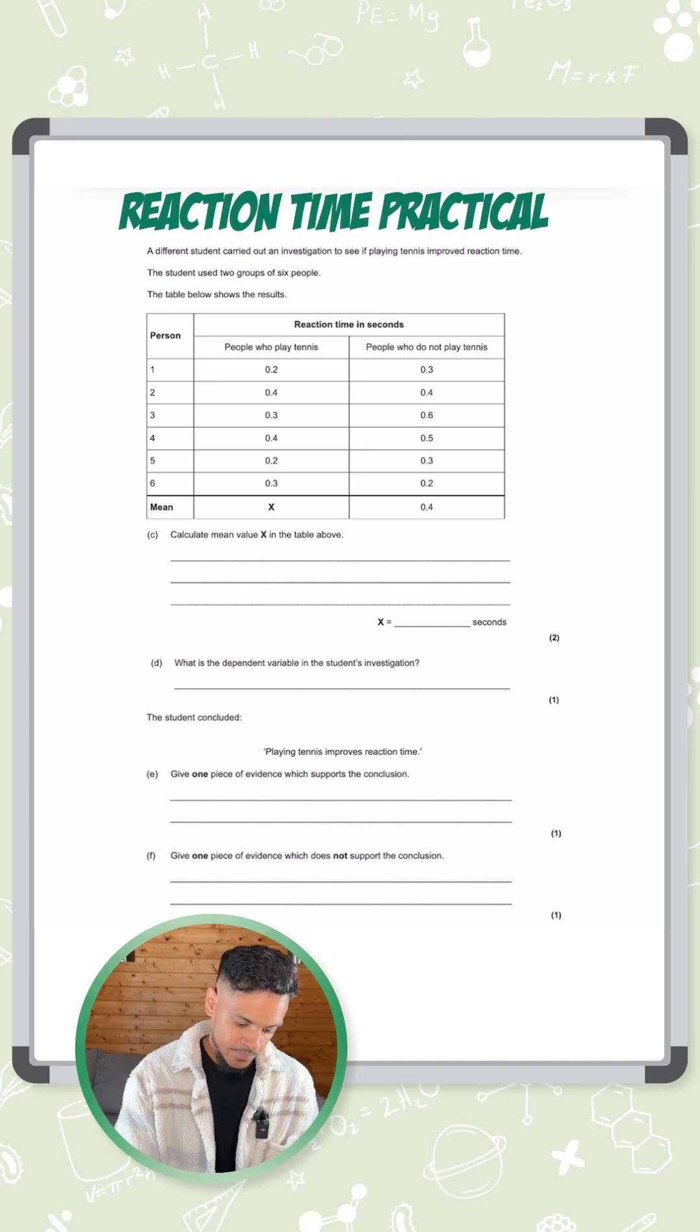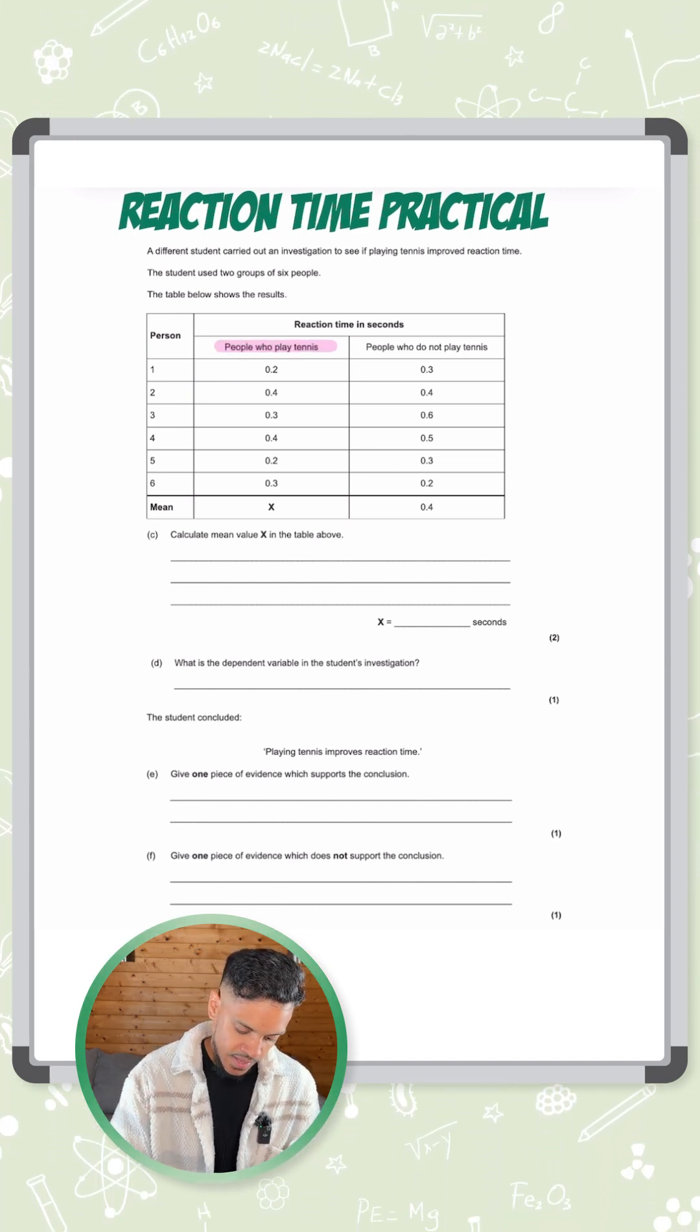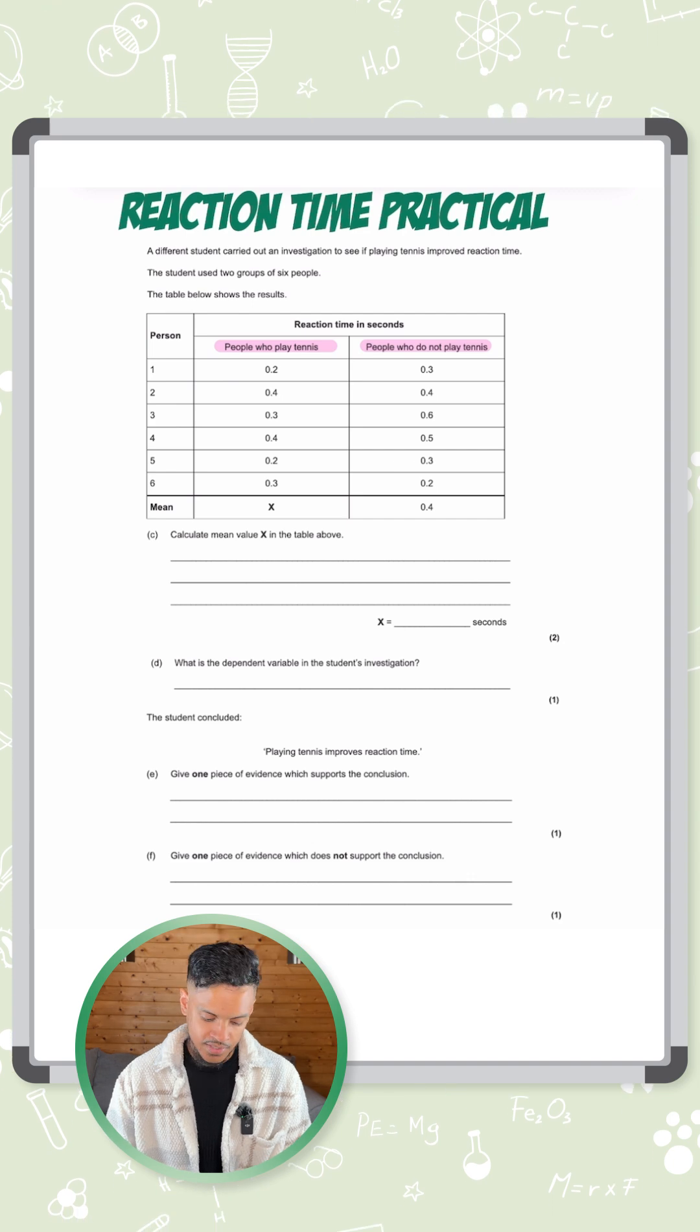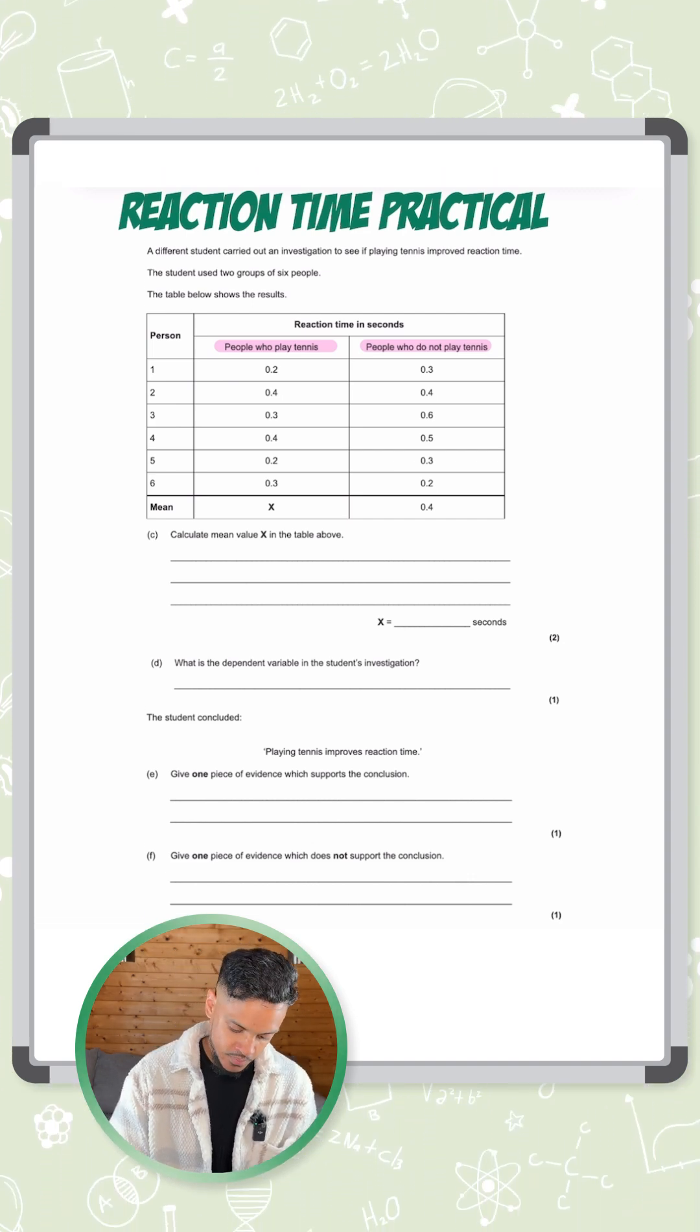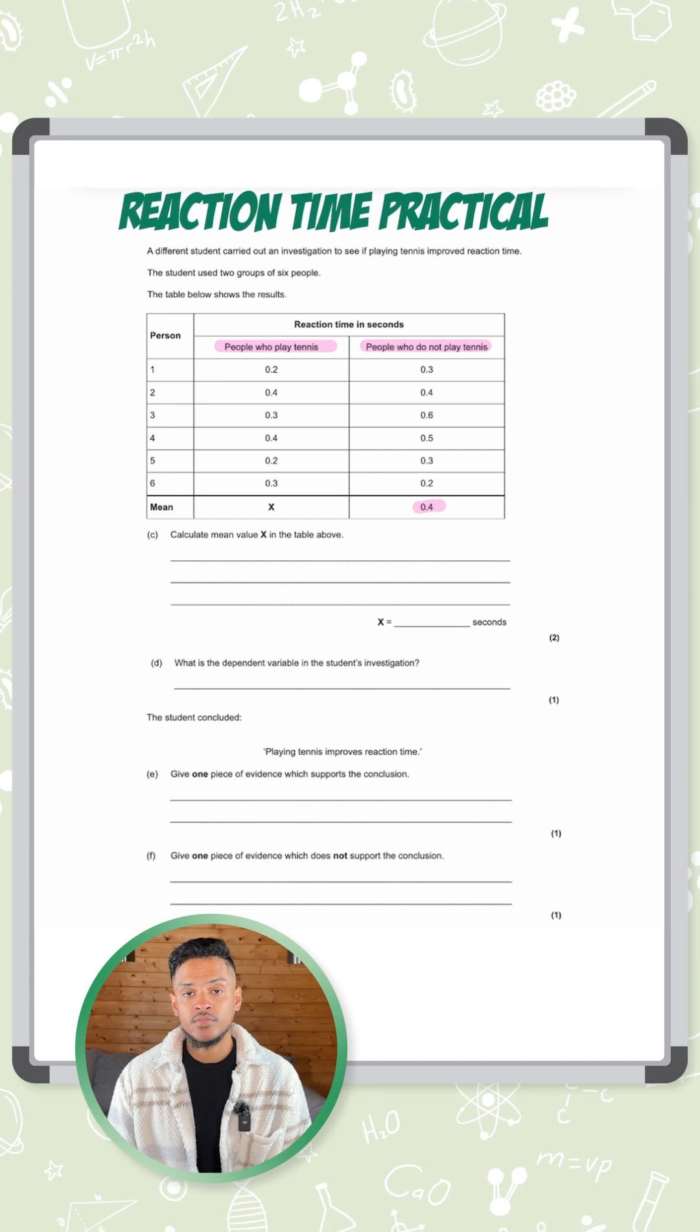So you can see here, we have six people who play tennis and six people who don't play tennis. We've got all of their reaction times here and at the bottom we have an average, a mean of all of those values.